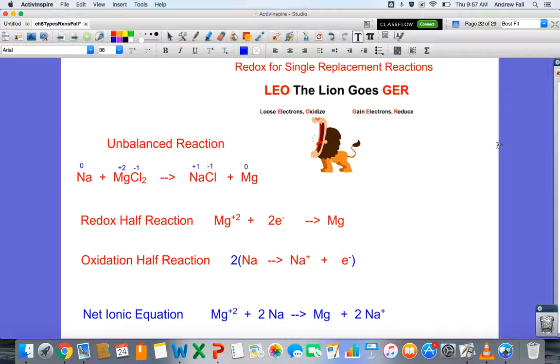Chloride also had negative one charge in its reactant state, and magnesium now has zero charge in its elemental state. Sodium's charge became more positive, while magnesium's charge went from positive to neutral.